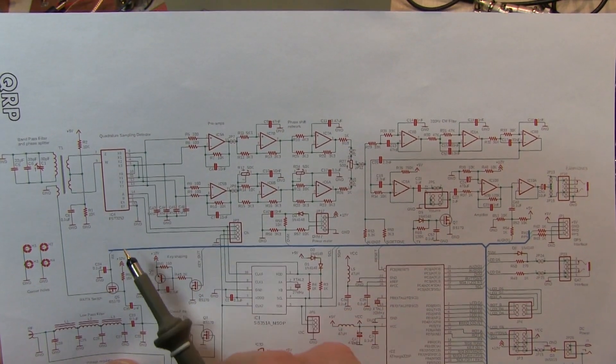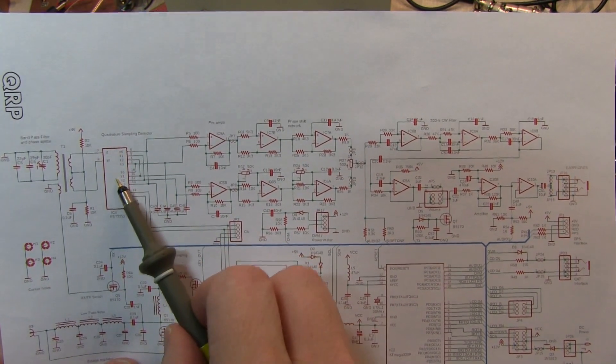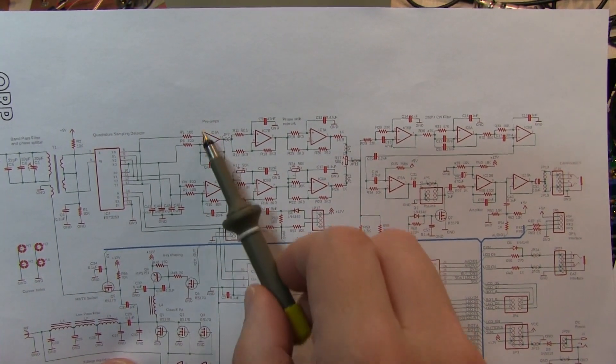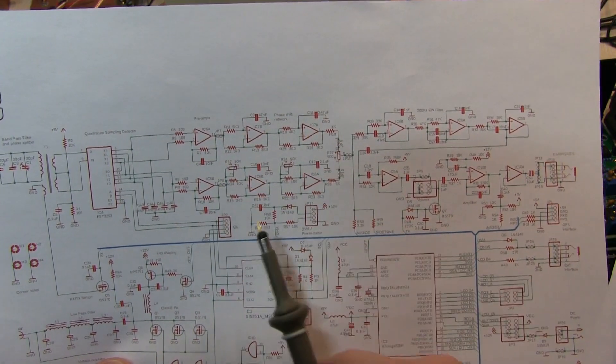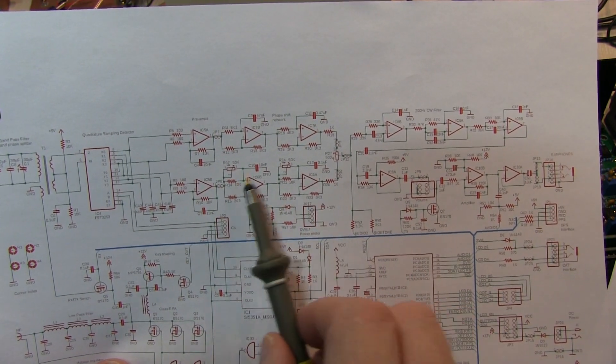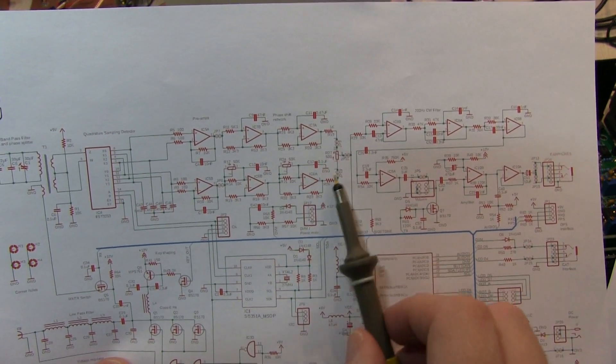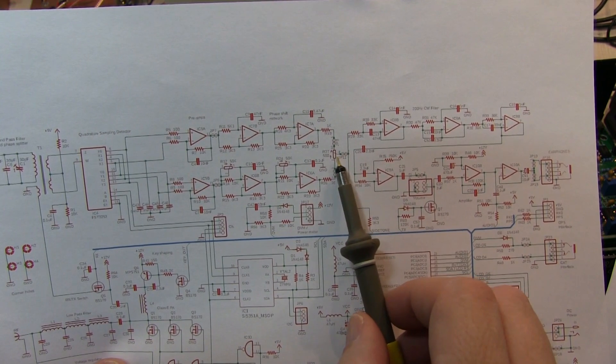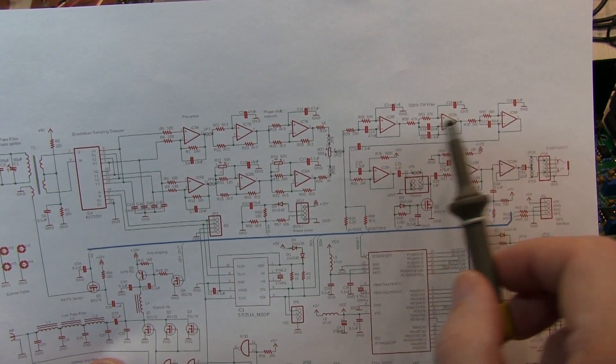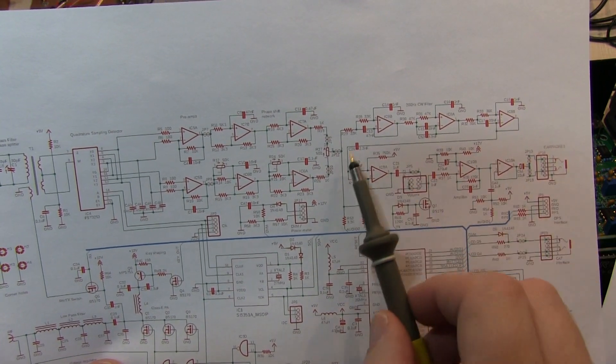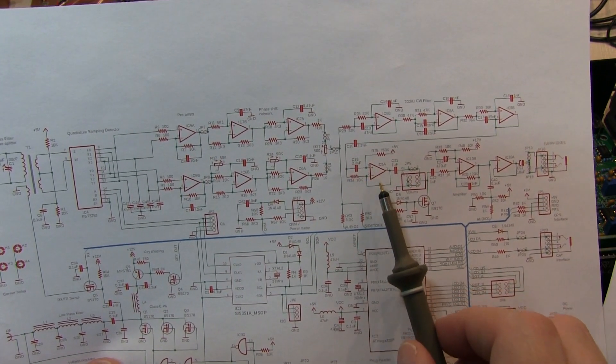And here's what that path looks like in the schematic. This is our quadrature sampling detector. These are the two preamps for the I and Q. And then we just have essentially a gain stage here. And this network is our 90 degree phase shift. And then by adding those together here we wind up canceling the unwanted sideband. And then we go through our 200 Hz CW filter. That's this stage right here. And then a final amplifier stage.